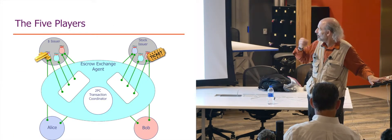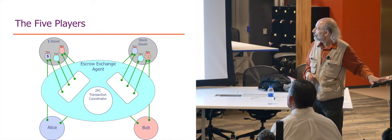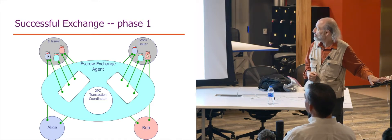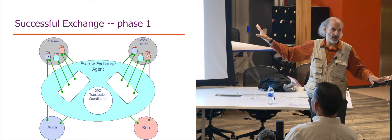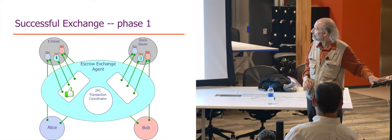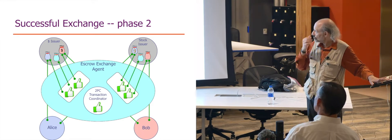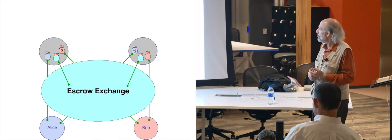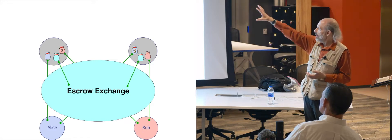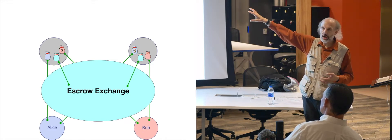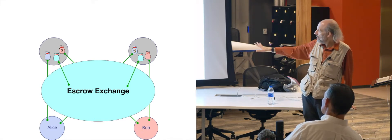The escrow exchange in particular — for Alice's gold for Bob's concert tickets — is basically a two-phase commit among mutually suspicious parties using ERTP to manipulate the underlying assets. The escrow exchange contract shows this pattern of five players: the issuer of one of the goods being traded, the issuer of the other good, the contract in the middle, and then the players.